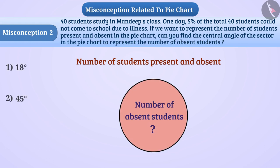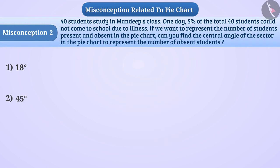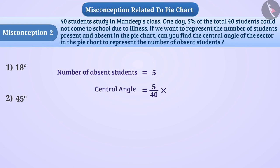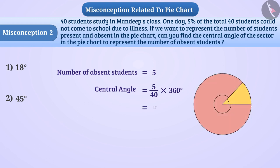Some children do not understand what is given in the question. They take the number of absent students as 5 and calculate the central angle as 5 divided by 40 multiplied by 360 degrees, which equals 45 degrees. They give option 2 as the answer, which is wrong.